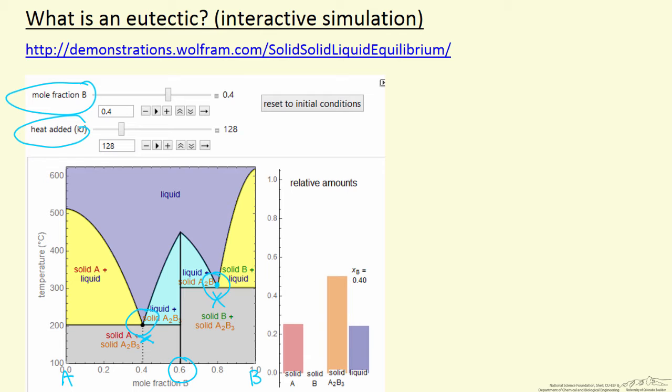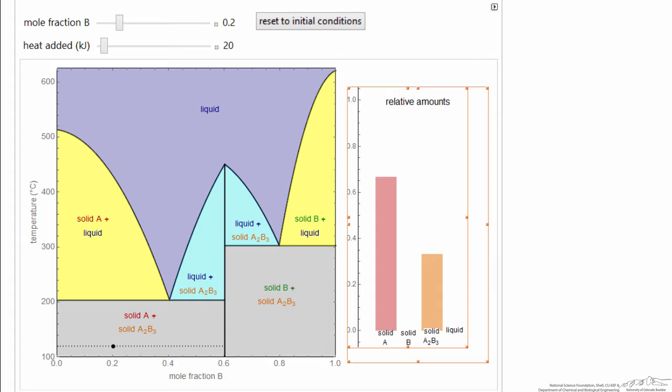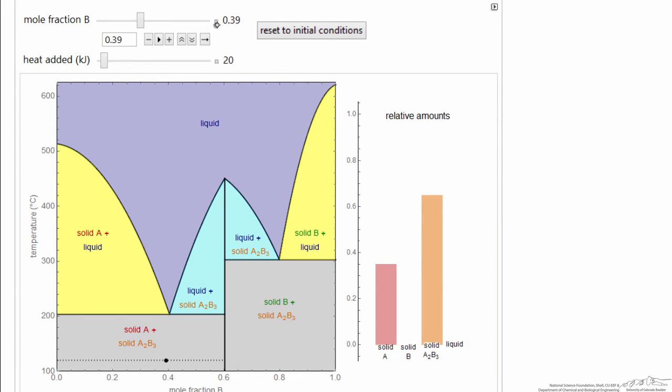So now let's go and look at this interactive simulation. So here's the interactive simulation, and what I want to do is I can move this mole fraction slider, and I can fine tune the movement if I want by stepping along. I'm going to try and get close to that composition that corresponds to eutectic. So this is the eutectic point right here.